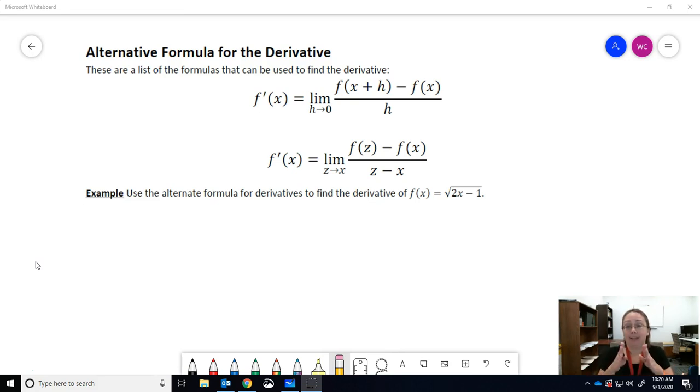So rather than defining the distance between the points as h, we're simply taking the points themselves, x and z, and letting them get closer and closer together. So what I want to do is solve a problem using the alternate formula for derivatives to find the derivative of this function here.